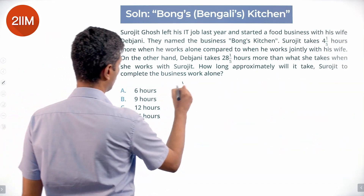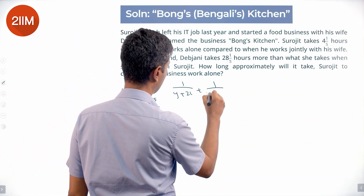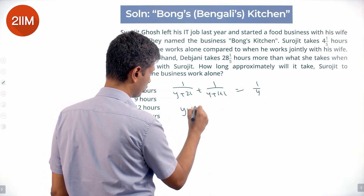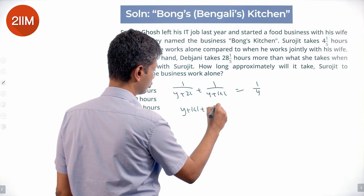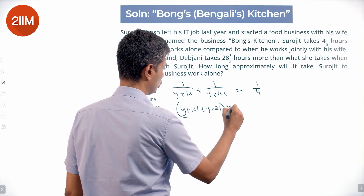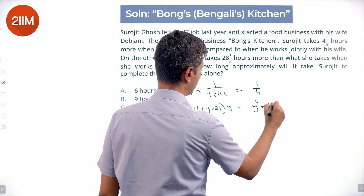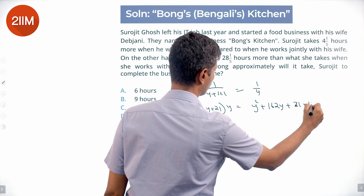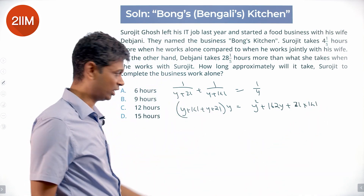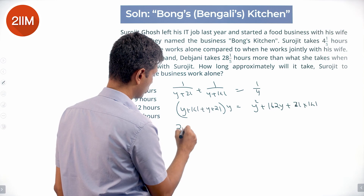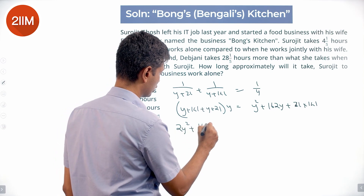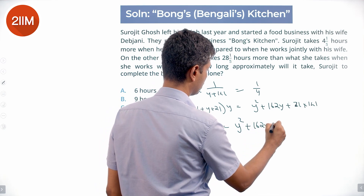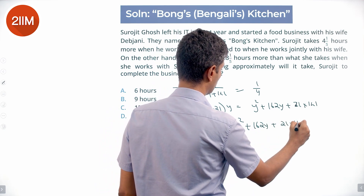So this becomes: 1/(y + 21) + 1/(y + 141) = 1/y. Expanding: (y + 141) + (y + 21) = y² + 162y + 21×141, which gives us 2y + 162 on the left side equal to y² + 162y + 21×141.